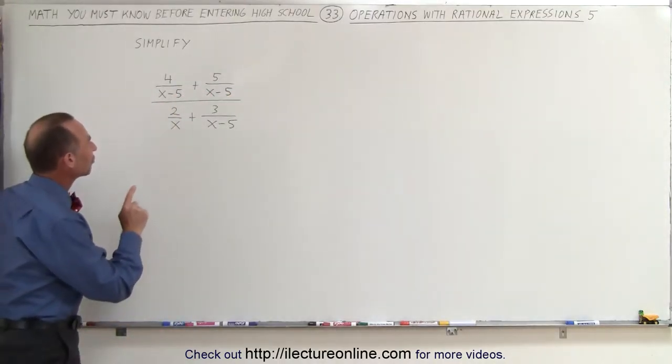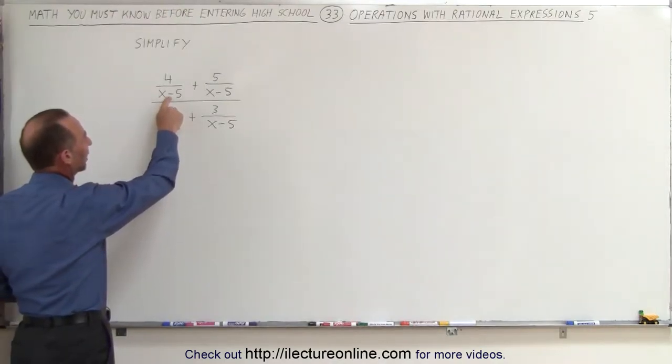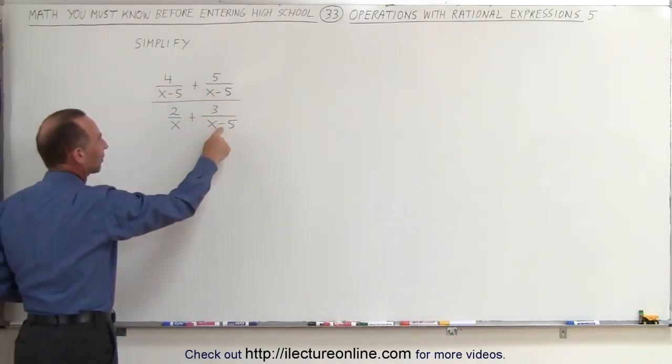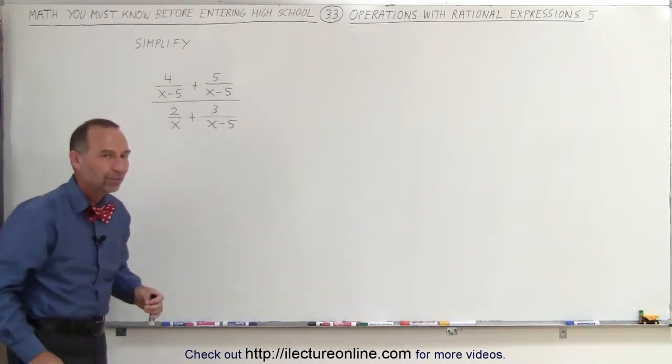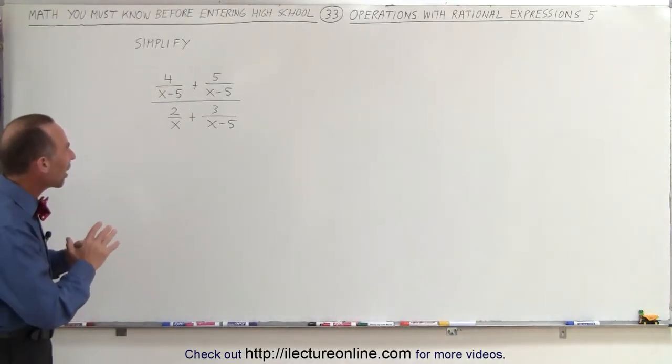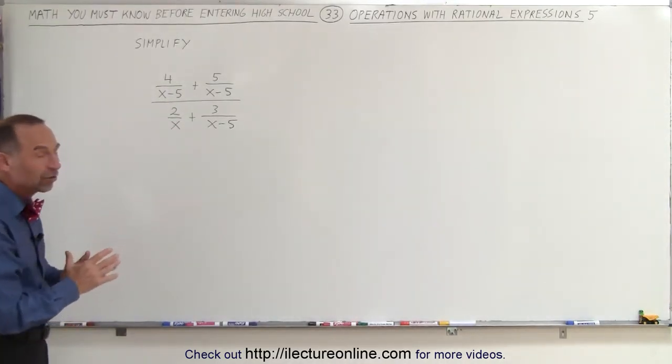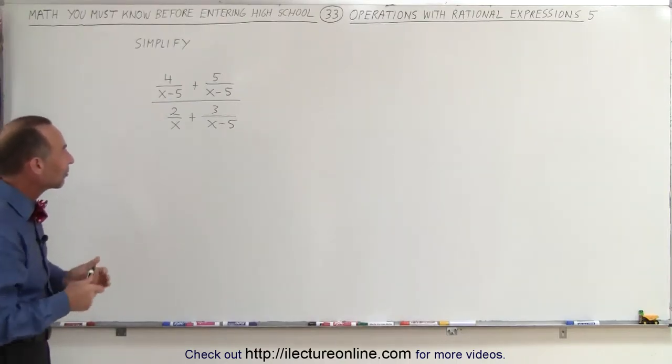So we're going to look at each of the denominators. Here we have x minus 5 appearing multiple times, and here we have the x. The smallest common factor of all the denominators is the product of x and x minus 5.